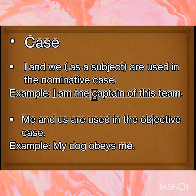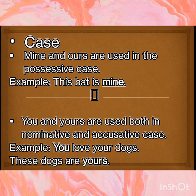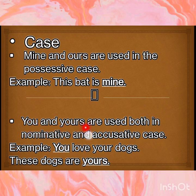Now we come to case. I and we, as subjects, are used in the nominative case. Example: I am the captain of this team. Me and us are used in the objective case. Example: My dog obeys me. Mine and ours are used in the possessive case. Example: This bat is mine. You and yours are used both in nominative and accusative case. Example: You love your dogs. These dogs are yours.